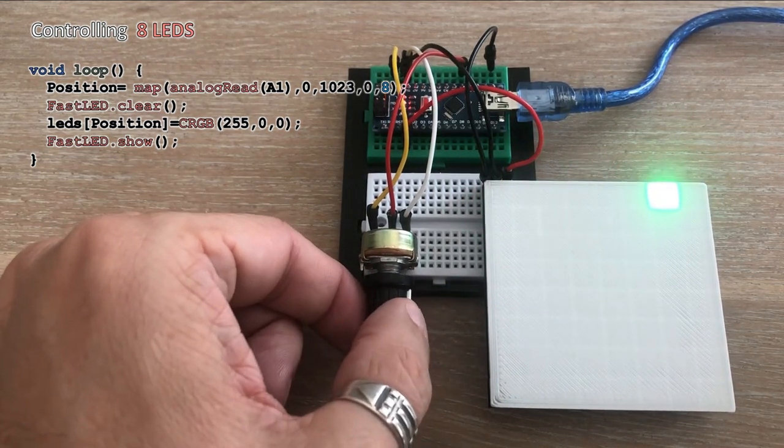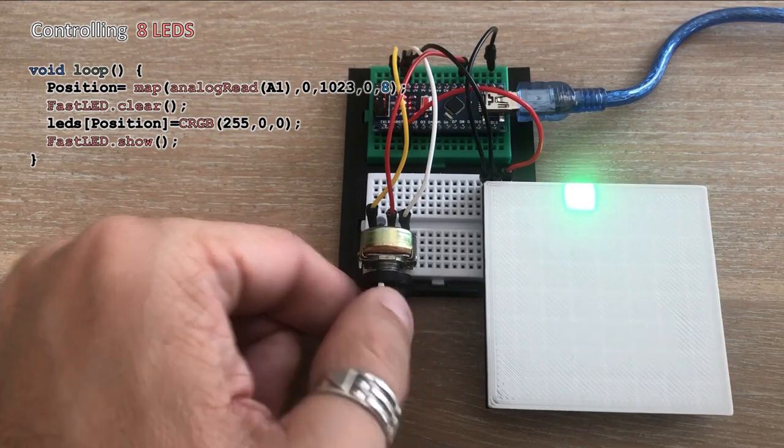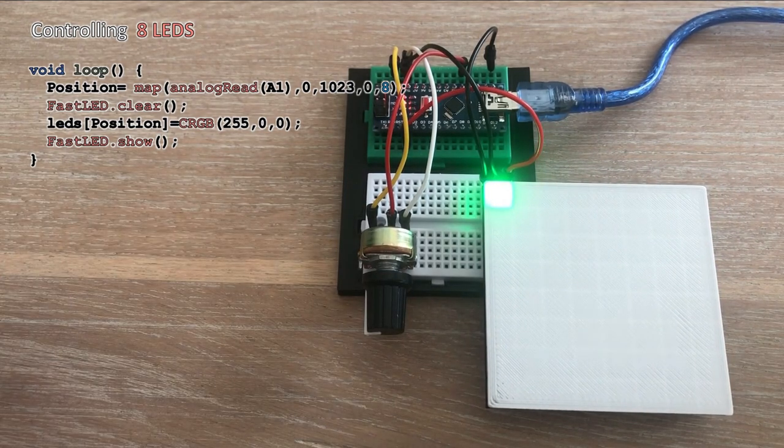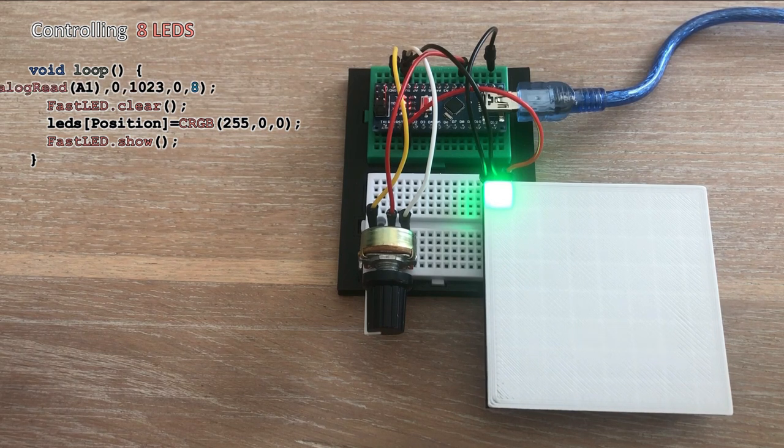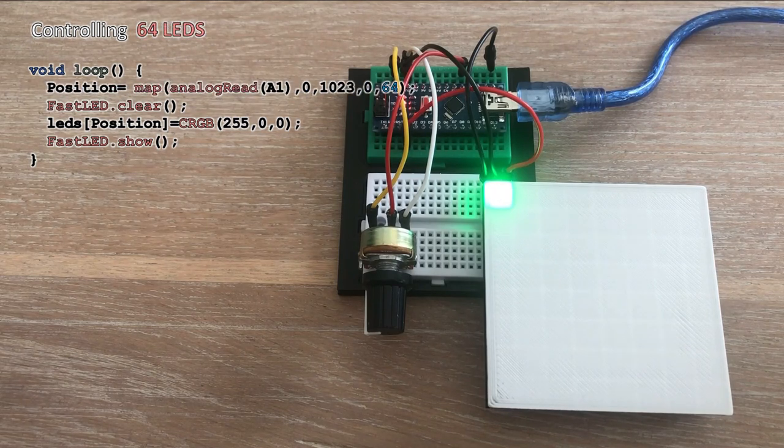After reloading the code we are able to lit the last LED of the top row and we are not able to lit the first LED of the second one, even though the mapping should allow us to do it. But the problem is fixed. Let's now change the mapping again to control all 64 LEDs.